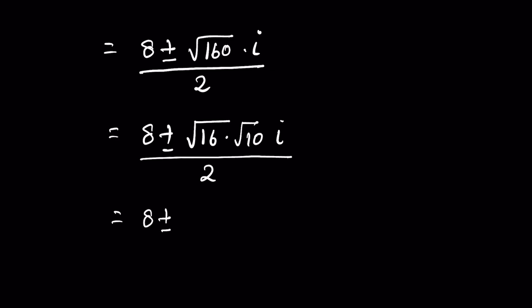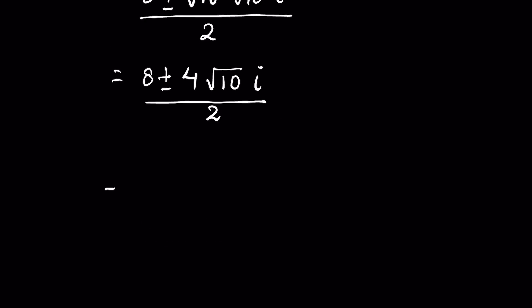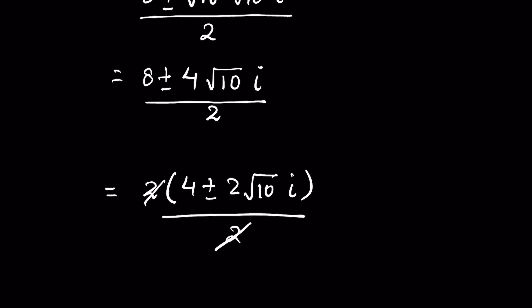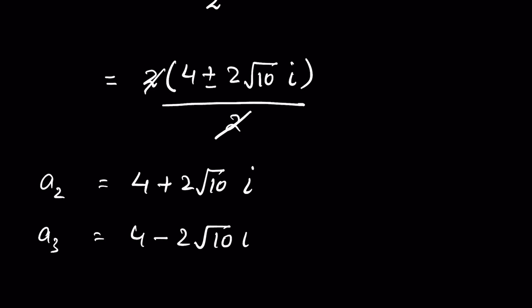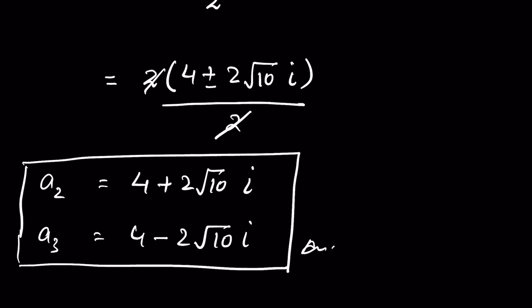Simplifying by factoring out 2 from the numerator: (2(4 ± 2√10 · i)) / 2, the 2s cancel. The two complex roots are a = 4 + 2√10 · i and a = 4 − 2√10 · i.